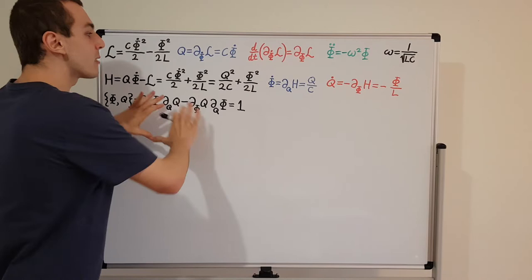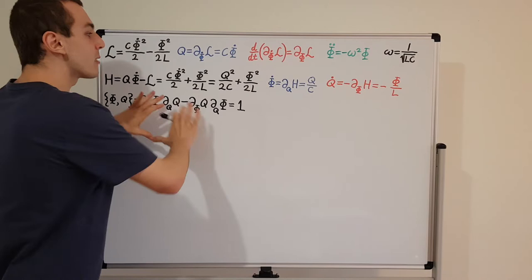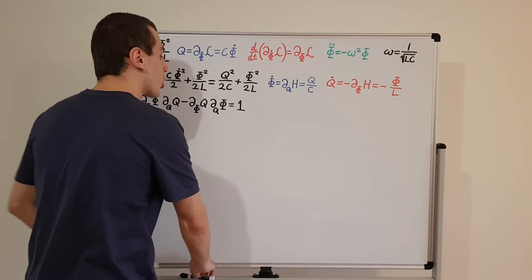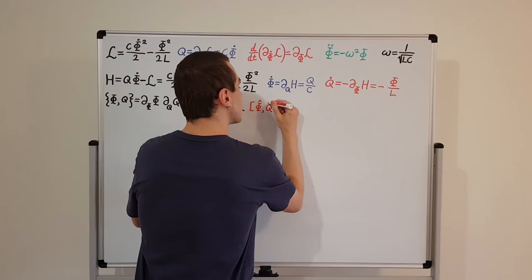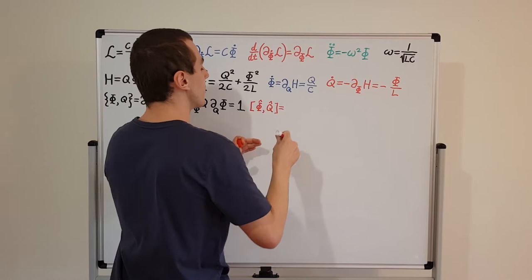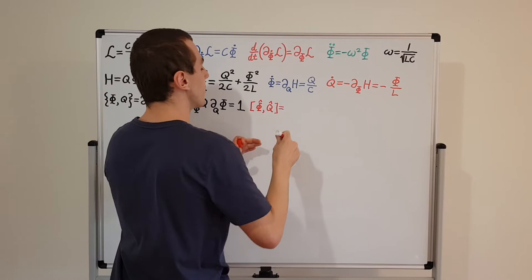Now let's translate the language of Hamiltonian mechanics into quantum mechanics. I'm going to write the commutator. Over here we have the Poisson bracket; now I'm going to write the commutator. We're going to have the commutator of these operator quantities, so I'm going to turn these guys into operators.